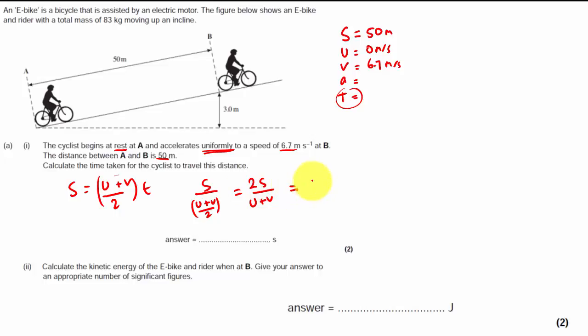Now summing the numbers in, 2 times 50 divided by 6.7, crunching the numbers gets me 14.9 something something something, basically 15 seconds. So that's my answer for that part. 15 seconds.